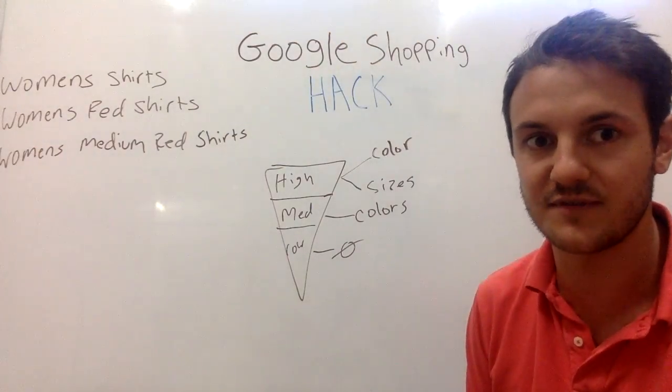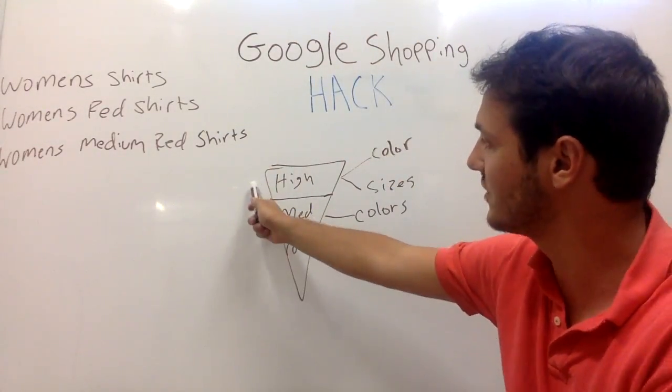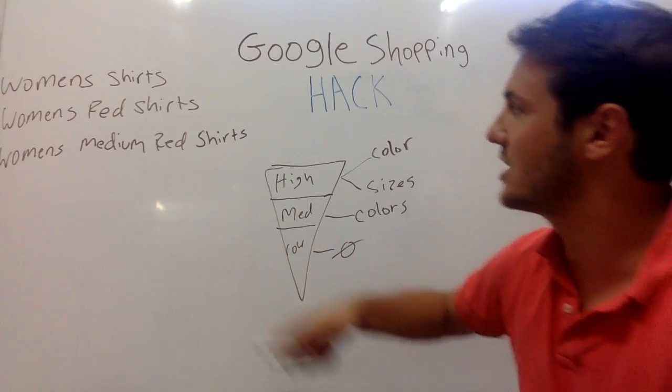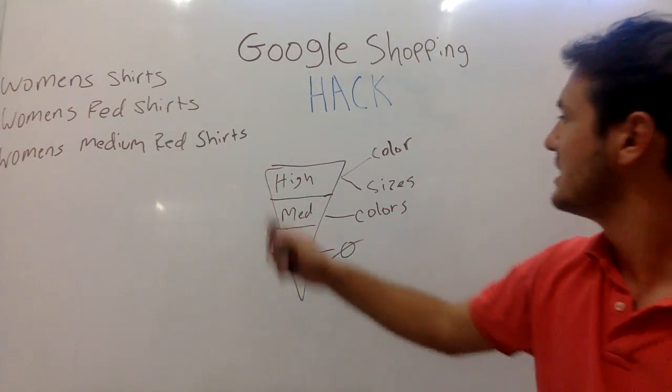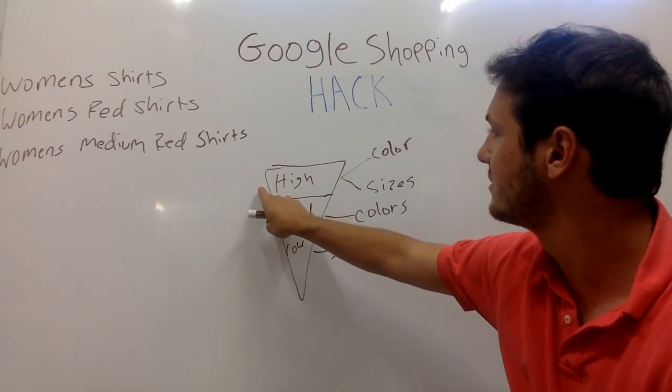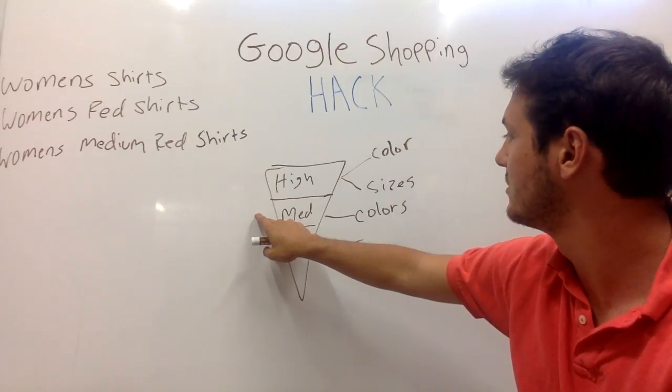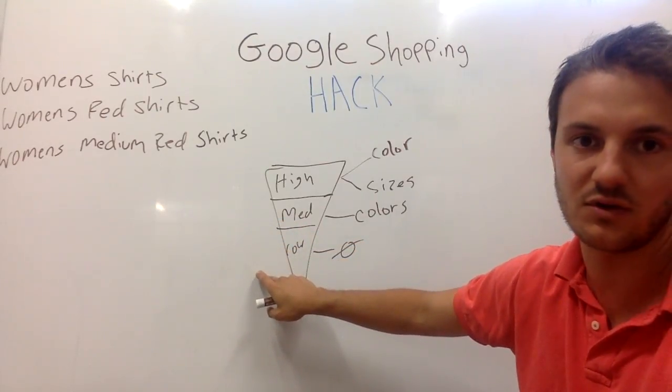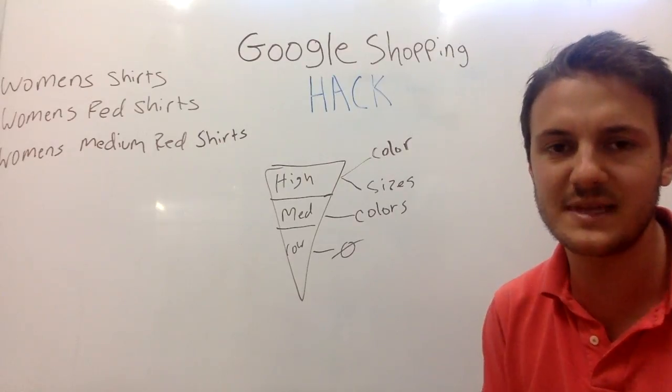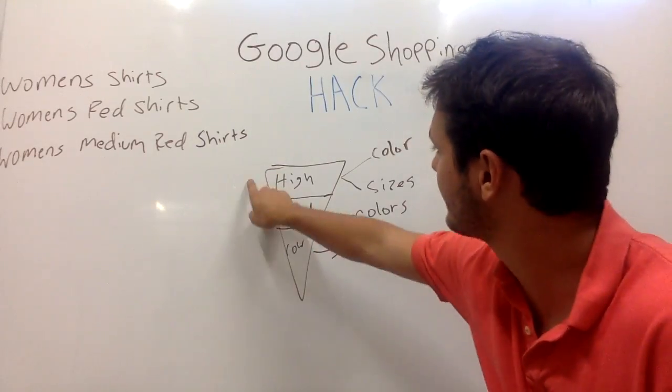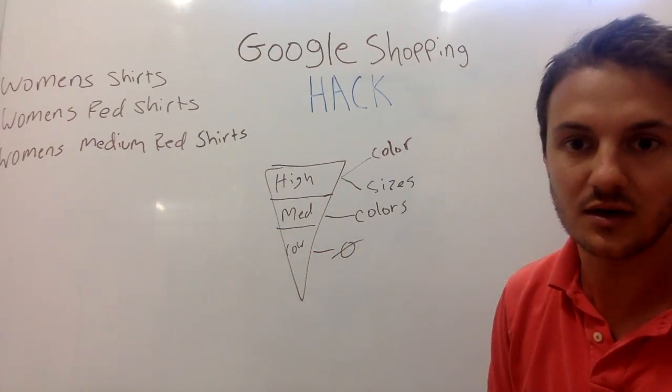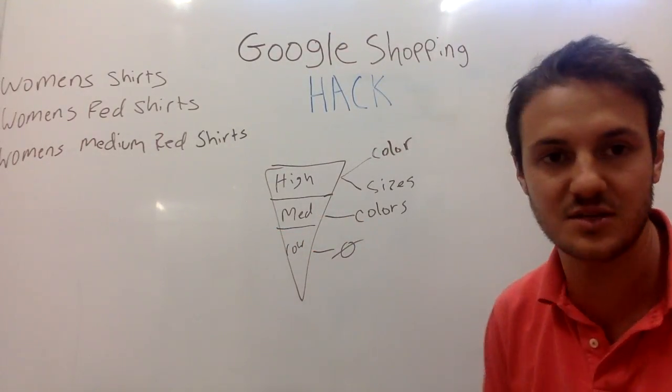Now as a counter example, if someone types in women's shirts it's going to go to the high priority first and it's not being blocked by color or size. Now if someone types in women's red shirts it'll go to the high priority campaign, it'll get blocked, go to here it'll get blocked as well, and it'll go all the way down. Now as a final example, if someone just types in women's medium shirts that will get blocked in high priority but it'll actually match the medium priority because you're not using a color.